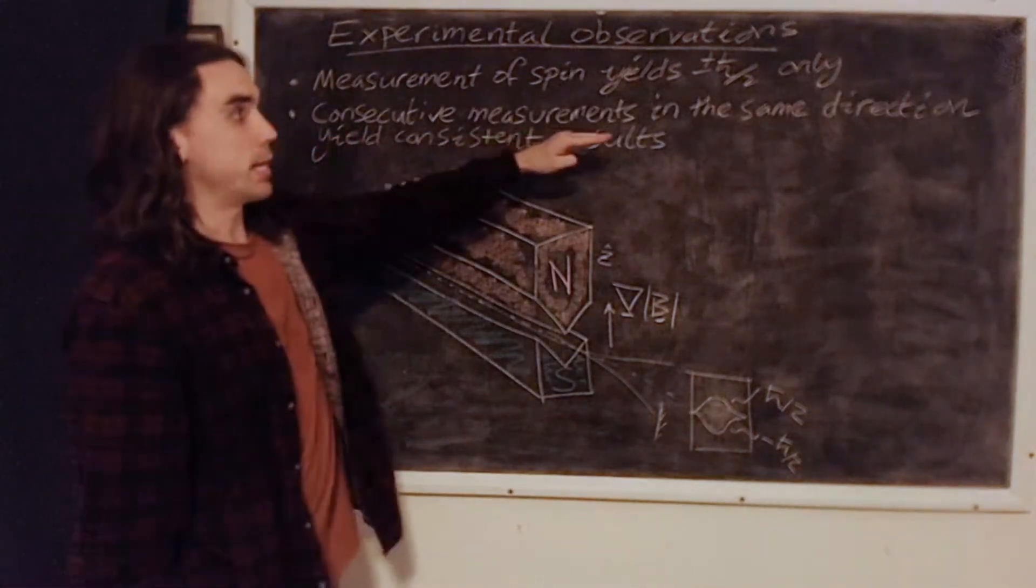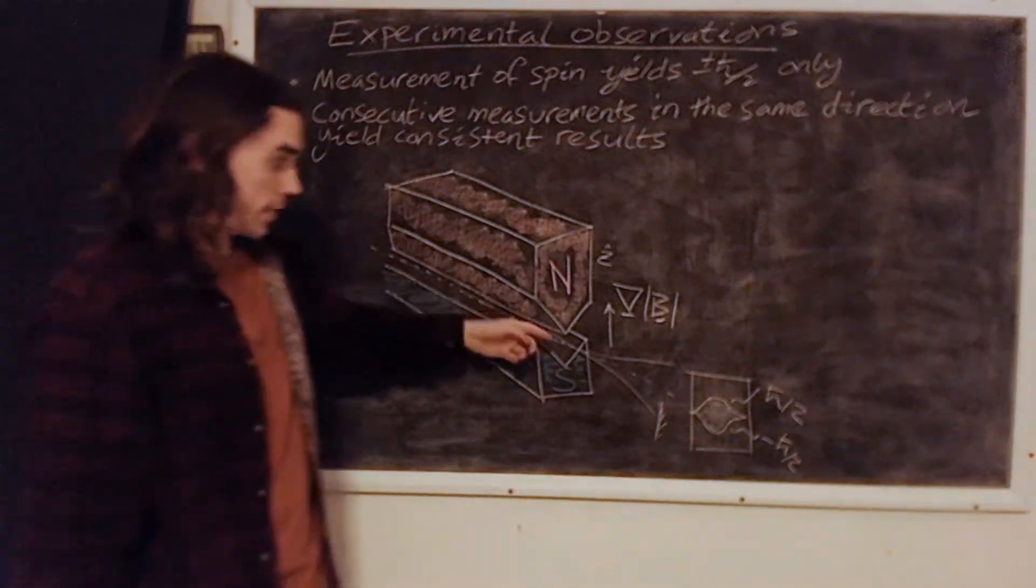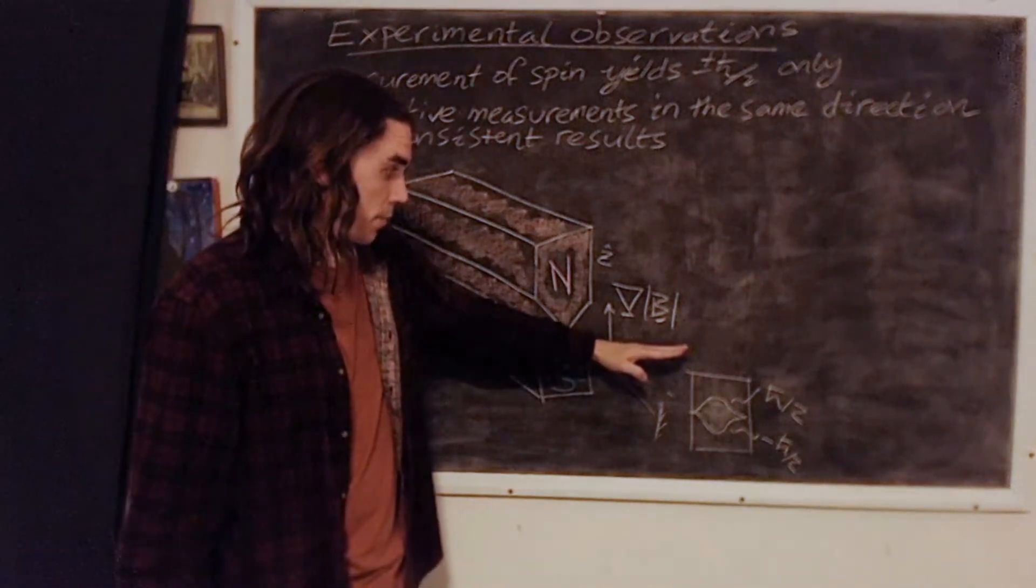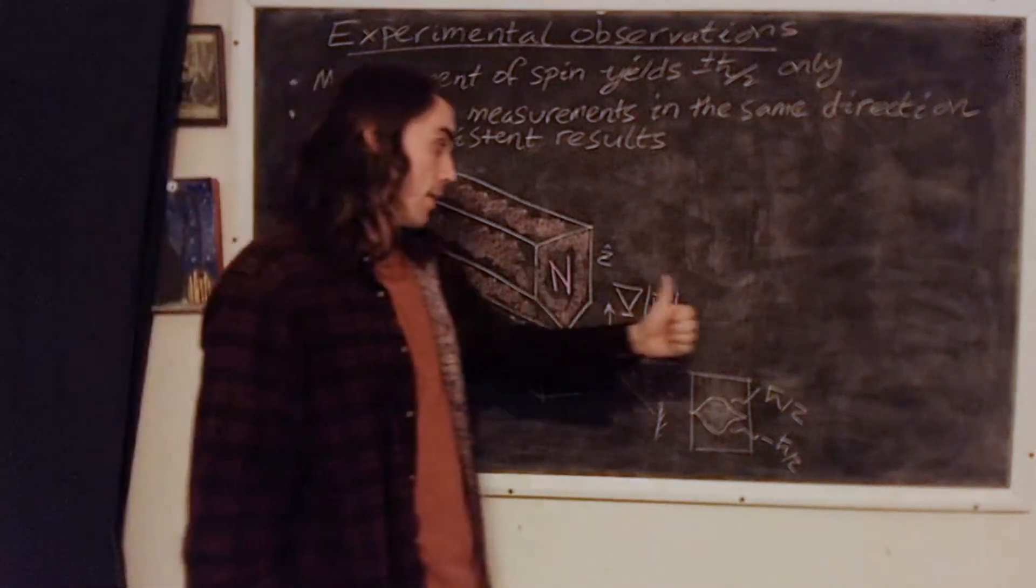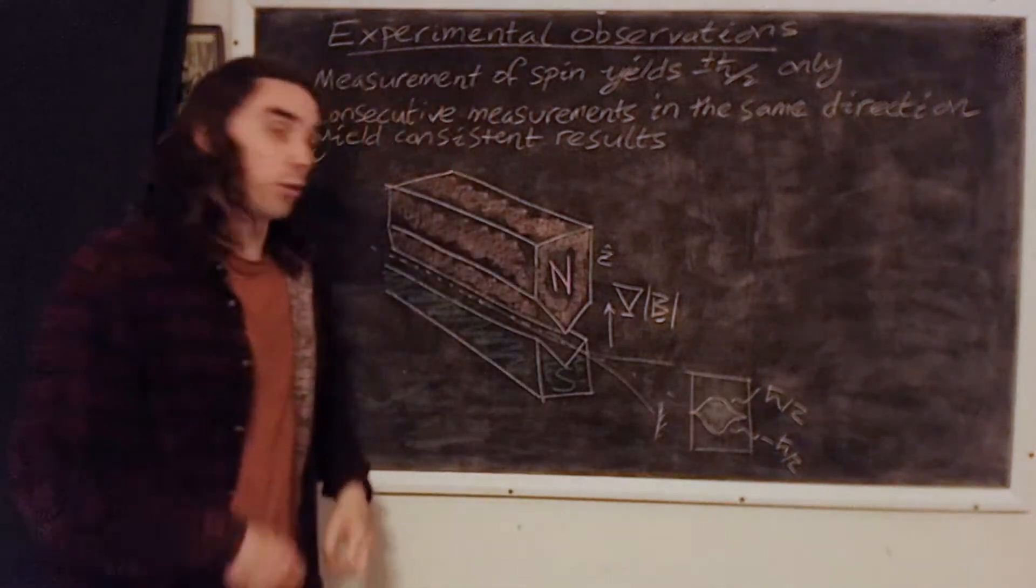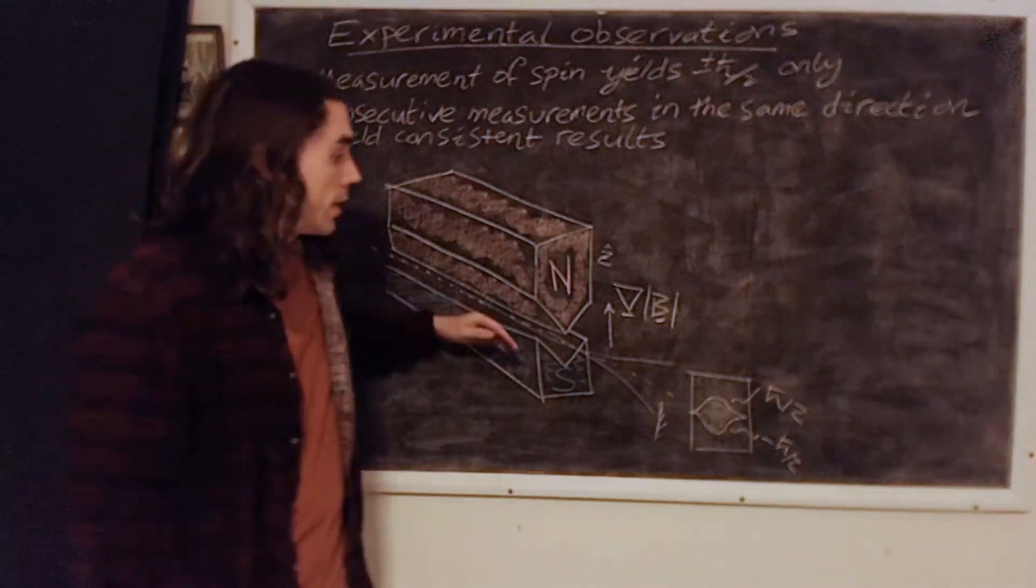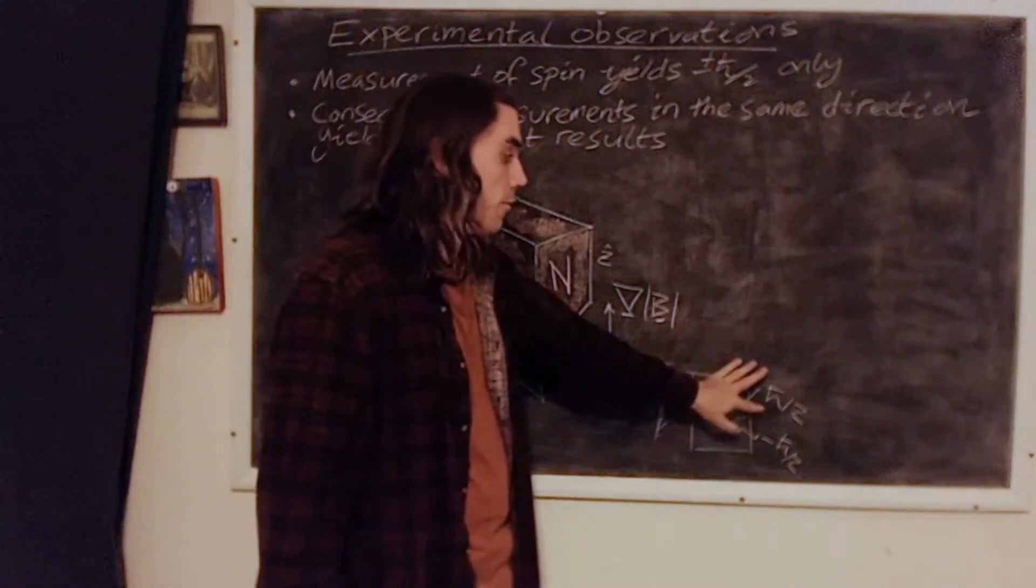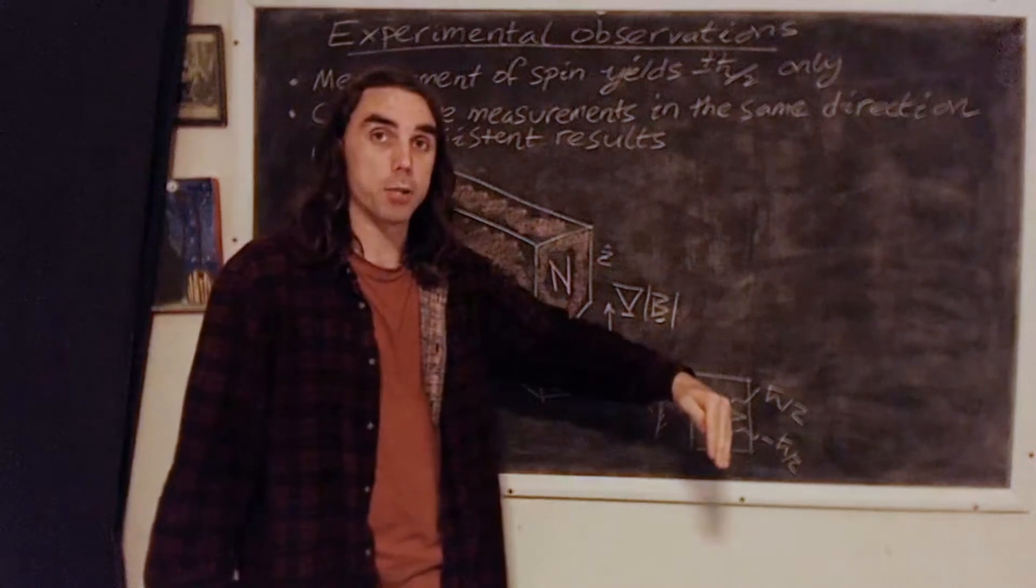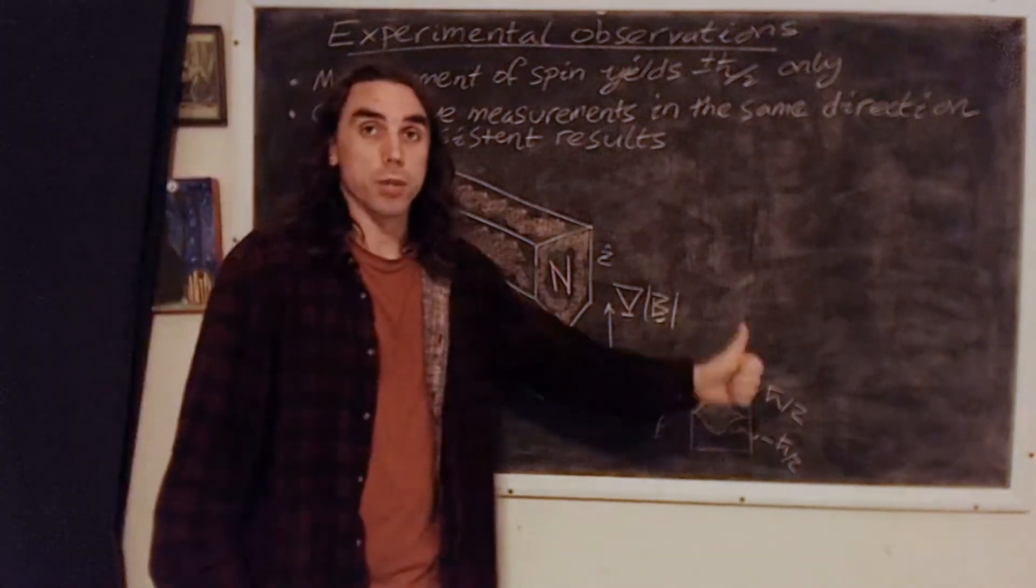Consecutive measurements of the spin in the same direction yield consistent results. So if we pass this electron beam selected out as plus h-bar over 2 in this direction through a second Stern-Gerlach filter in the same direction, all the electrons that get through the first will get through the second. Similarly, if we put a second one in the same direction and we block off all the ones that have plus h-bar over 2, only allowing the ones with minus h-bar over 2, none will get through because we'll get consistent results.